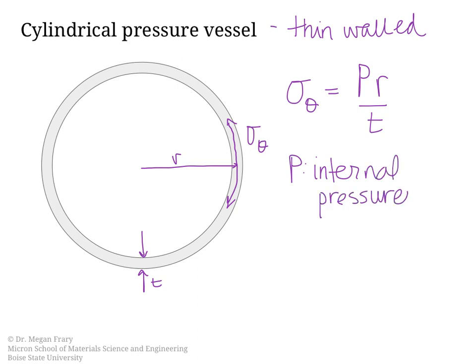We can also define the axial stress if we want. For example, if there were caps on the ends of this cylinder, the axial stress is just PR divided by 2T. So this is the case for a thin-walled cylindrical pressure vessel, something like a gas tank where the internal pressure is acting.